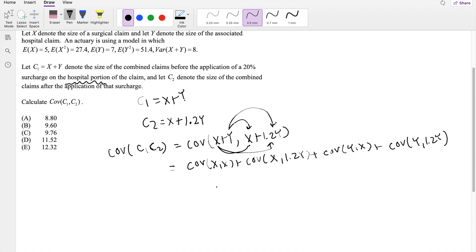And the cool thing about these are that the covariance of X comma X is just the same thing as variance of X, because covariance measures the relationship between two variables. And if it's the same variable, it's just basically just going to be variance of X. And likewise, this one right here, we can actually pull out the 1.2 because it's a constant.